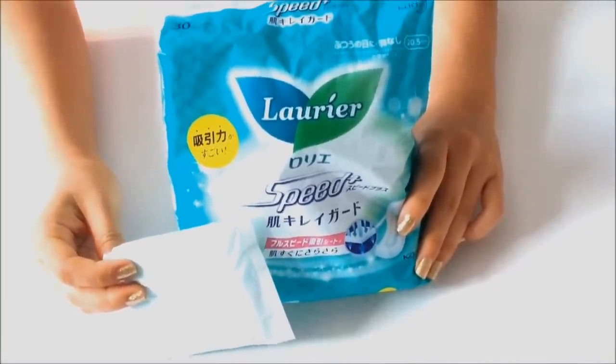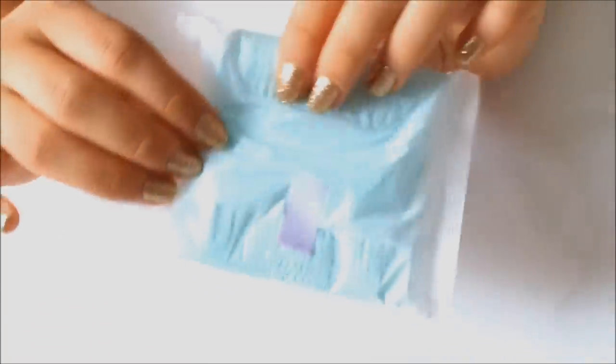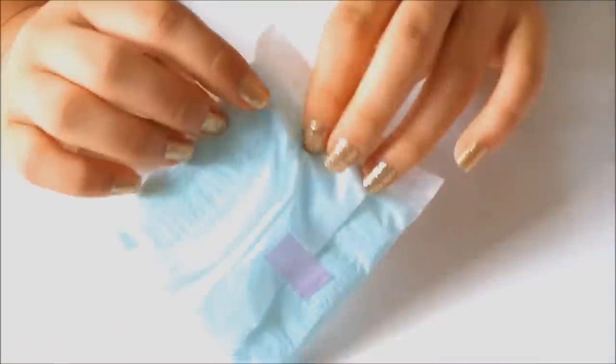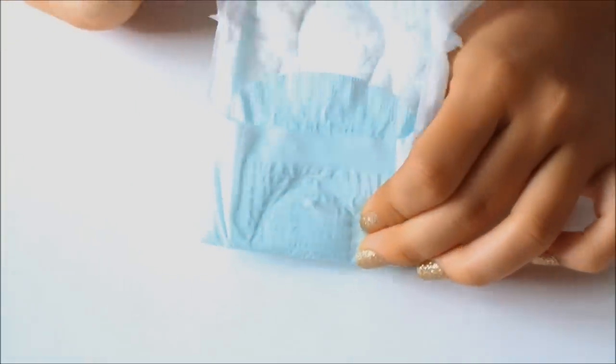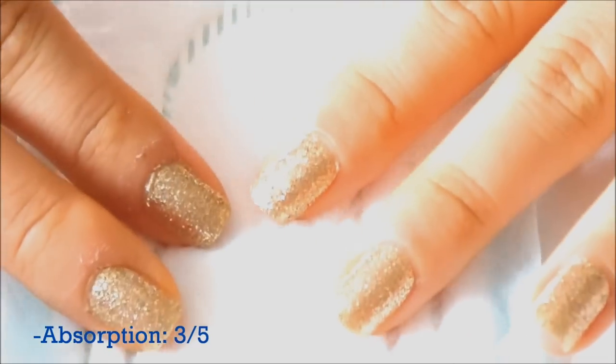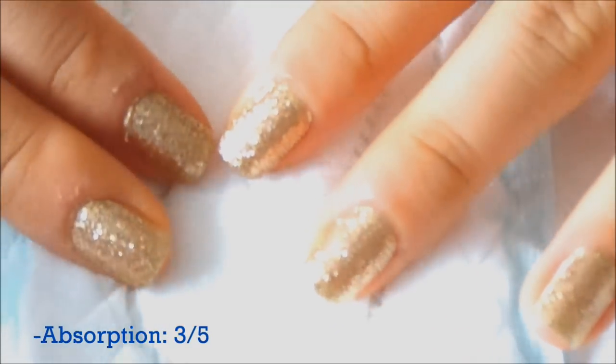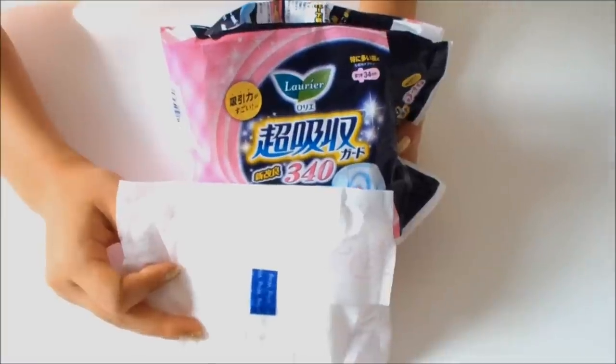Next one is with no wing. This has all the pros of the last pad. However, this one lacks the design. It has no wings so it kind of leaks at the side and it's not really sticky. By the end, it does not adhere to your panties, so it moves around.